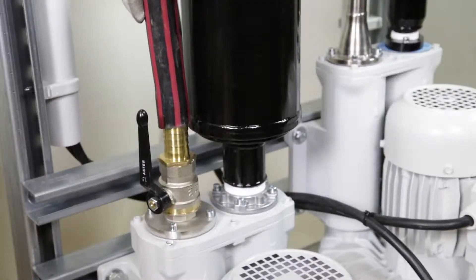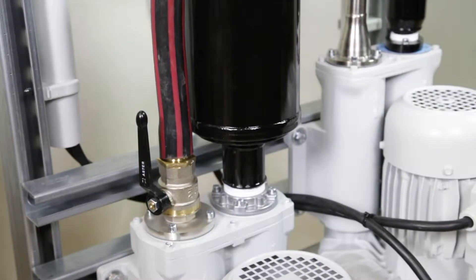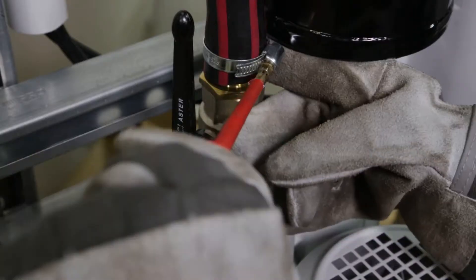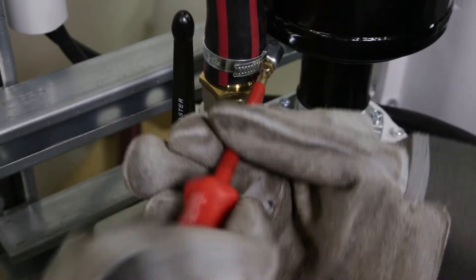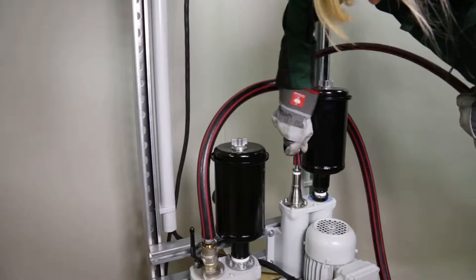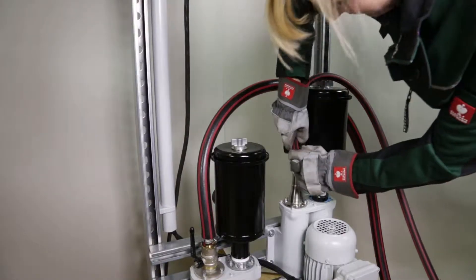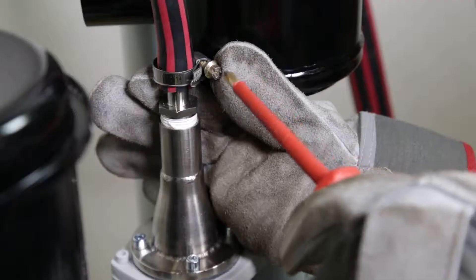Connect the hose to the injector forced air. Lock it. Connect the hose for the exhaust air. Lock it.